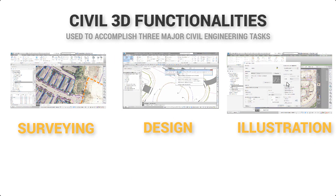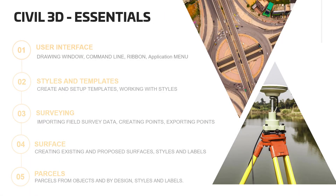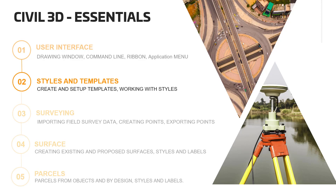In this course, we cover topics such as the Civil 3D user interface, where we see the tools available to us to complete a successful project, including the drawing area, the command line, the ribbon, the application menu, and much more. After the interface, the next logical step is to learn how to set up a project through the creation of styles and templates. Then it will be time to bring in some survey data and learn how to process it by using points, point groups, and description keys.